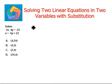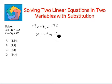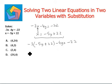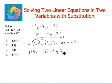Let's try the next question. Solve: negative 3x minus 4y equals negative 22, and x equals negative 5y plus 22. Again, in the second equation, we see that we are given the value of x in terms of y. We will substitute this value into the first equation. So: negative 3 times negative 5y plus 22 minus 4y equals negative 22. Negative 3 times negative 5y is positive 15y. Negative 3 times positive 22 is negative 66.